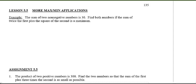Very similar to the previous ones we did in 5.4. Two variables once again: x will be the first number, y will be the second number. The secondary equation — the sum of two non-negative numbers is 30 — so x plus y equals 30.